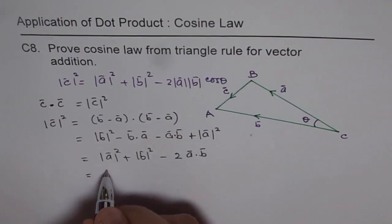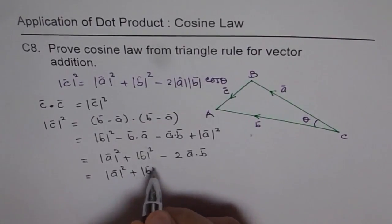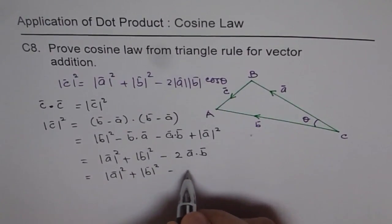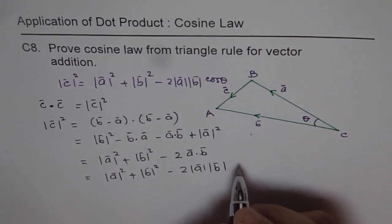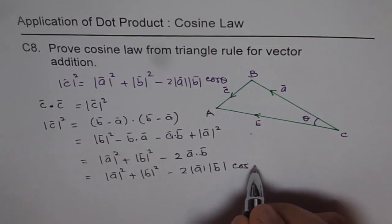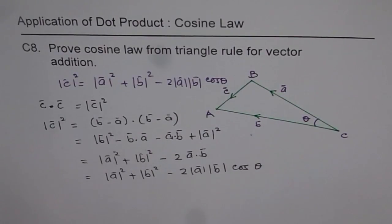Now, by definition, you know, what is A dot B? By definition, A dot B is two times magnitude of A times magnitude of B times cosine of theta, where theta is the angle between the vectors A and B.